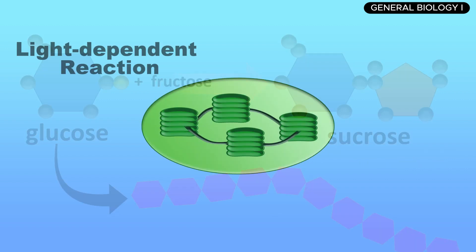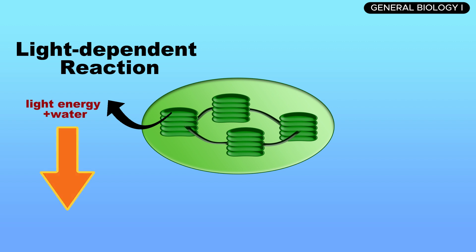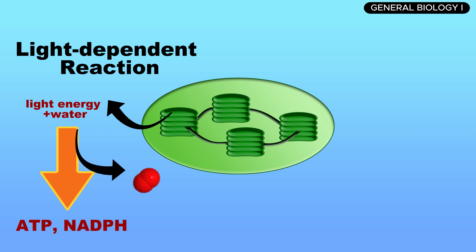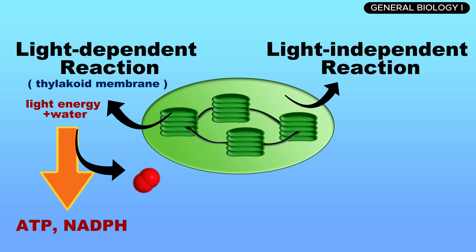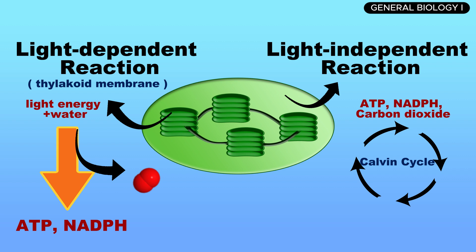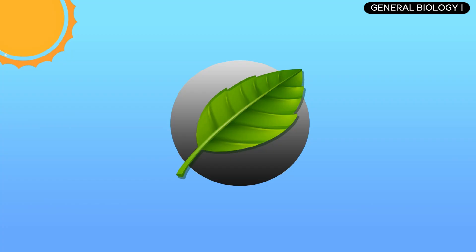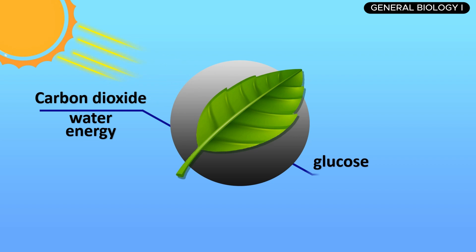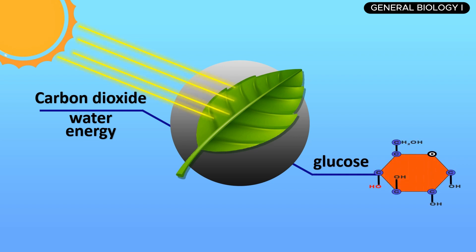To summarize: in the light-dependent reactions, sunlight is used to generate ATP and NADPH while releasing oxygen as a byproduct. This stage occurs in the thylakoid membranes. In the light-independent reactions, or Calvin cycle, the ATP and NADPH are used to fix carbon dioxide into glucose. This process takes place in the stroma of the chloroplast. Both stages are essential for converting light energy into chemical energy, fueling not just the plants themselves, but all living organisms that depend on them for food and oxygen.